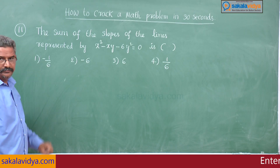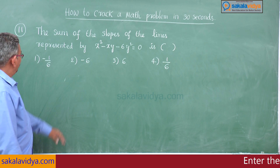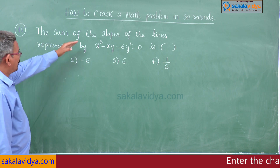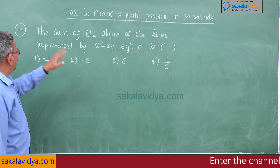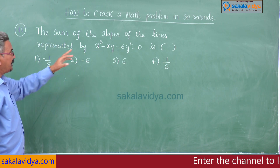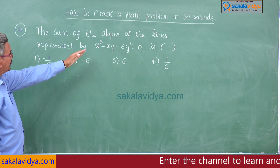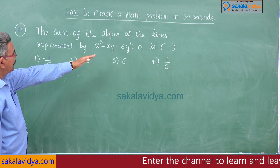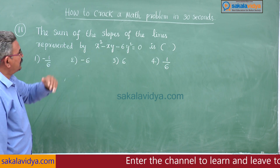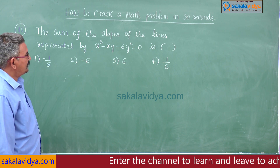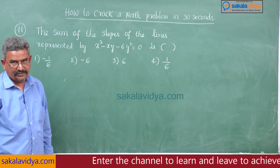Problem 11: The sum of the slopes of the lines represented by x² - xy - 6y² = 0 is...